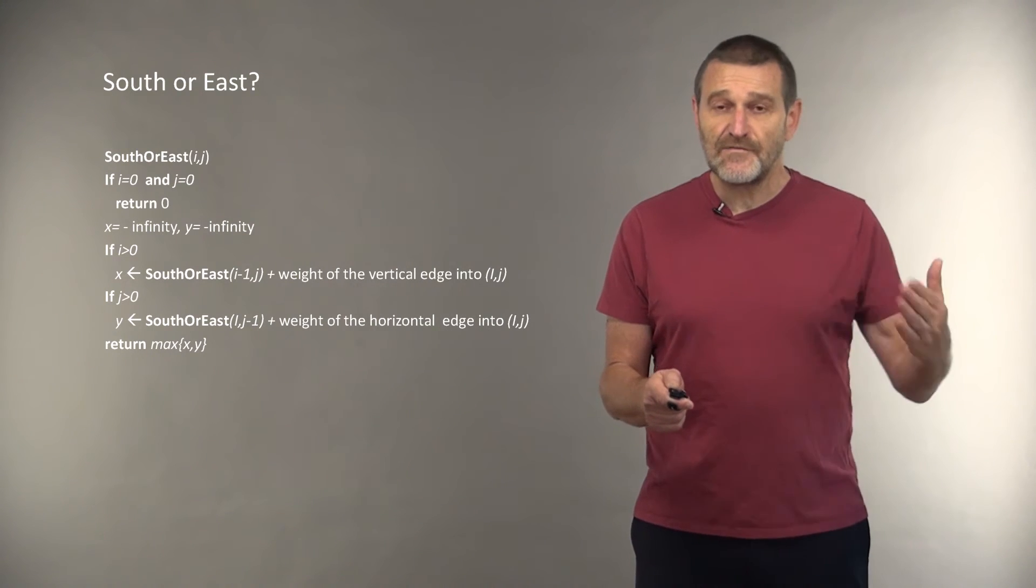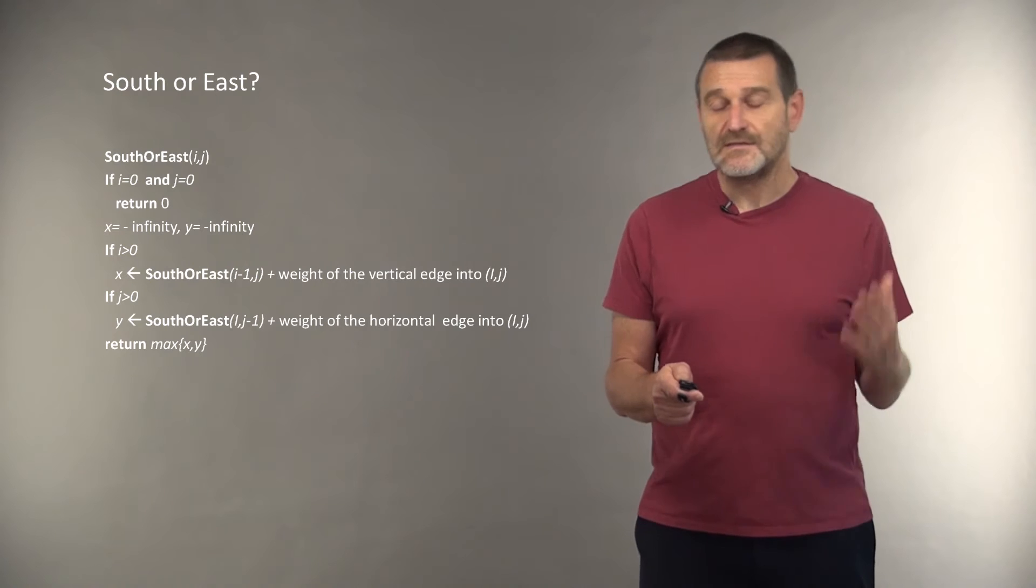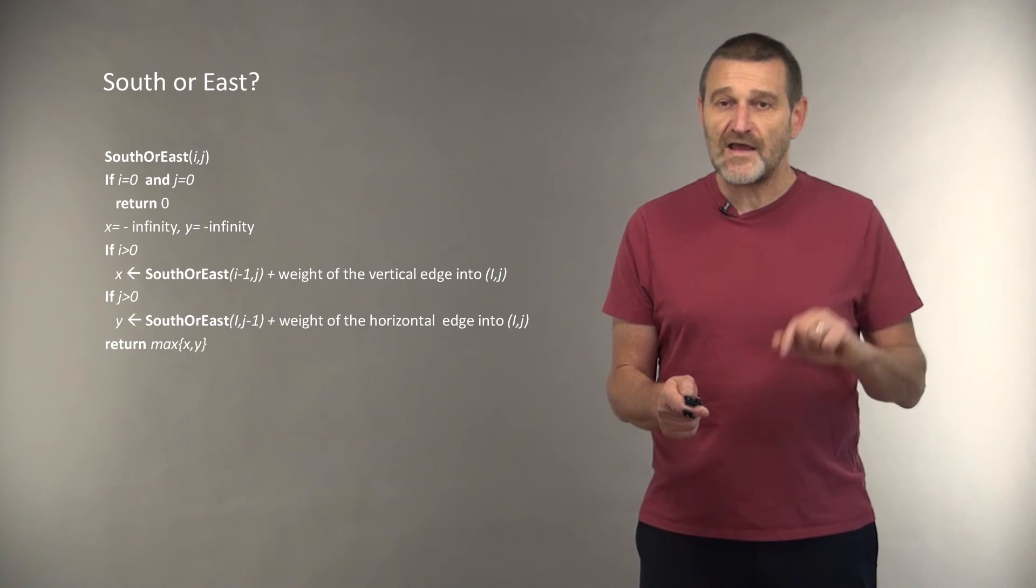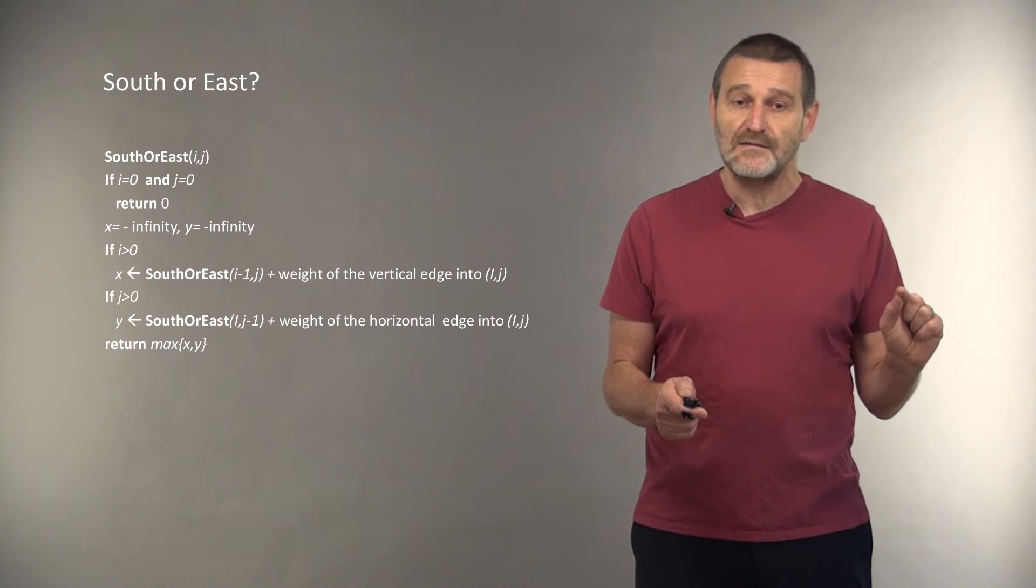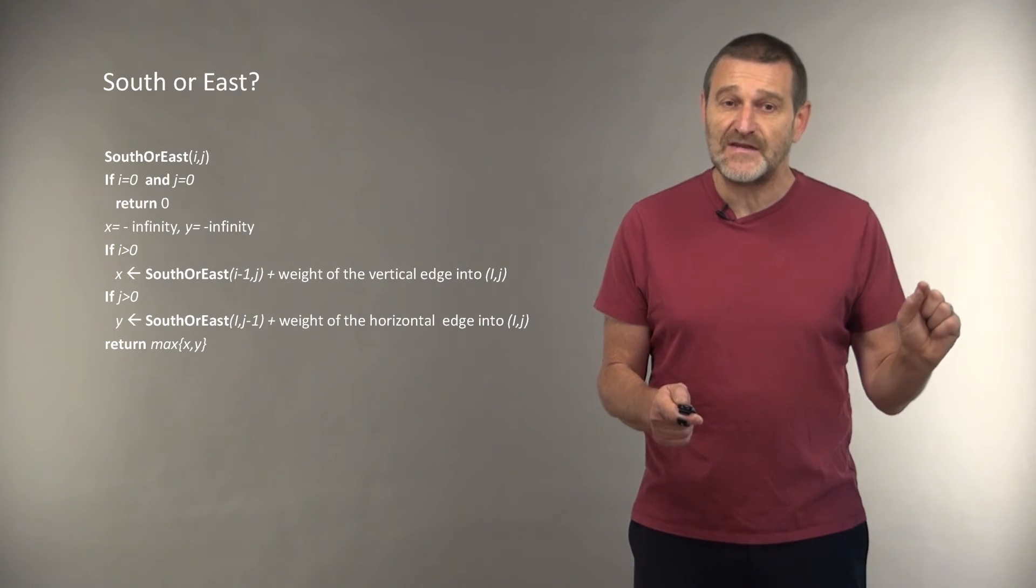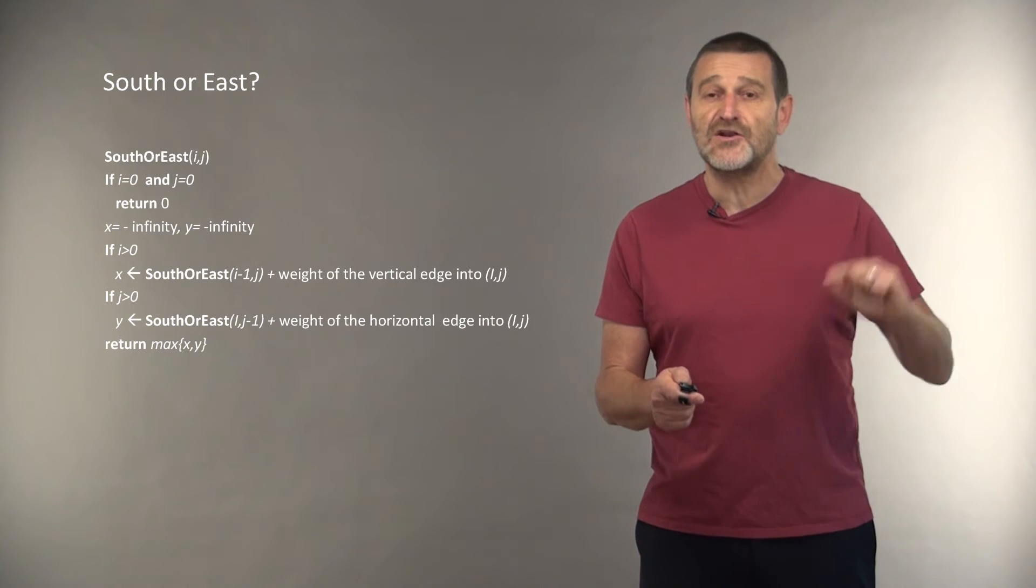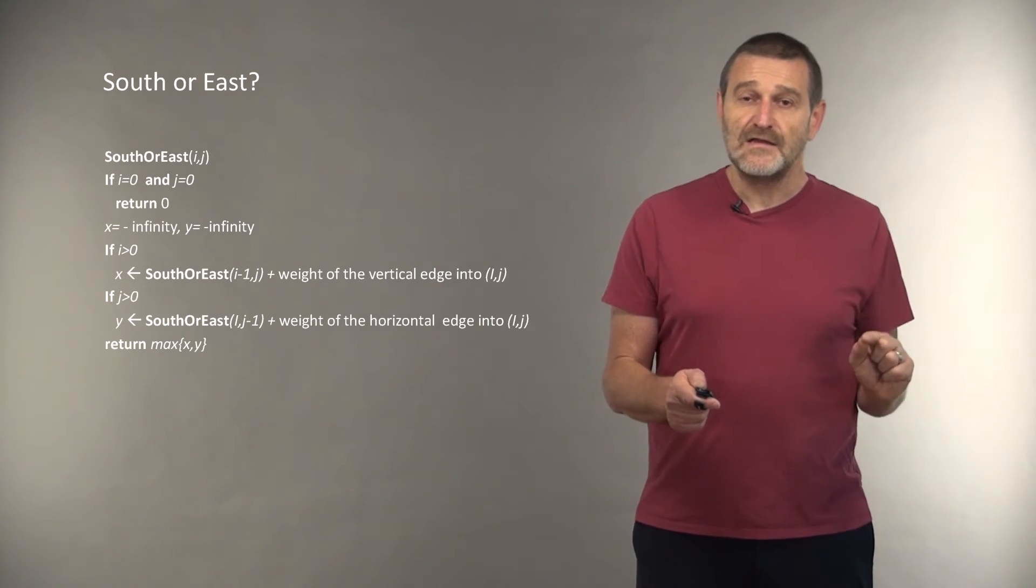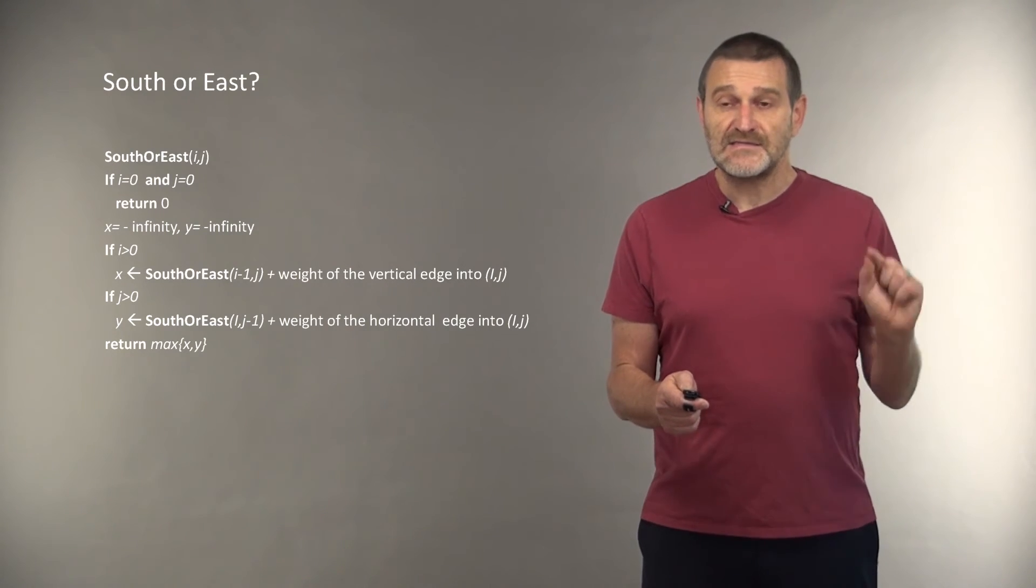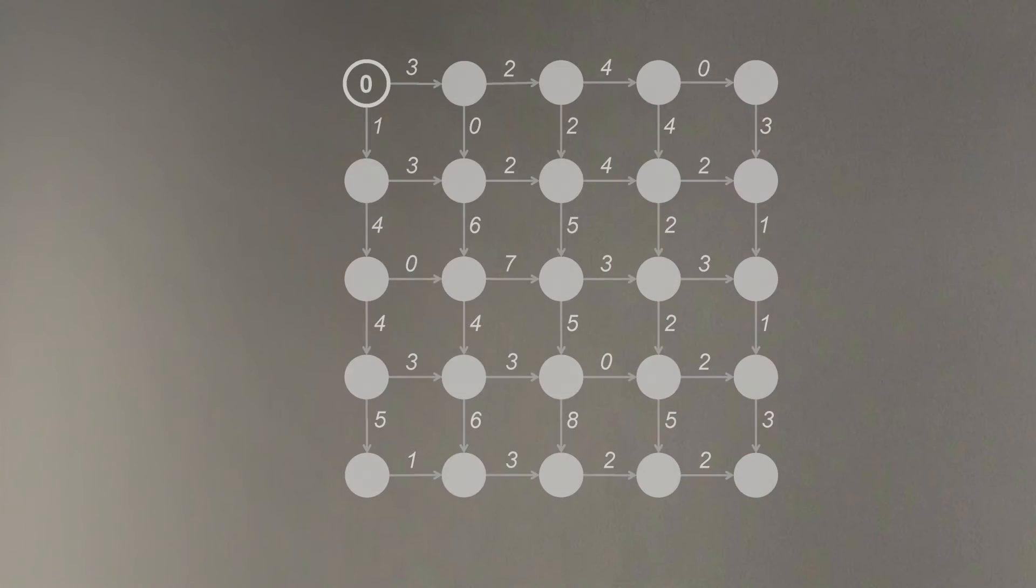Do you think this algorithm will solve our problem? If you watched me when I explained the change problem, you will figure out that this algorithm, while being correct, will take enormous time to finish, because we will be making recursive calls many, many times for a fixed value of i and j. And therefore, we need to come up with something better.